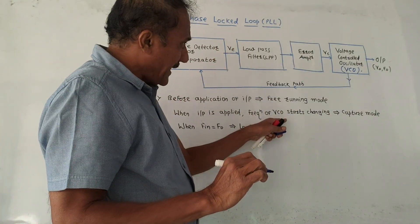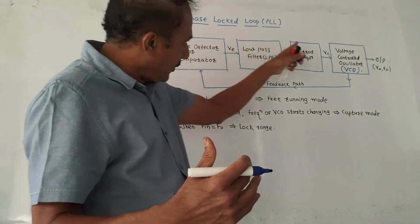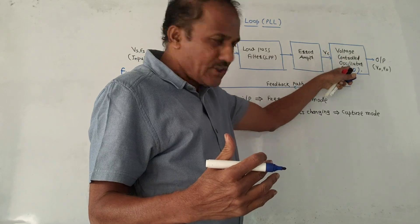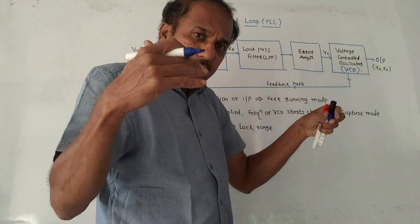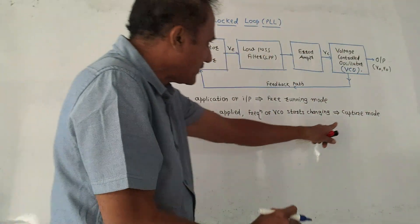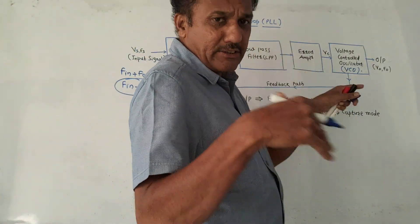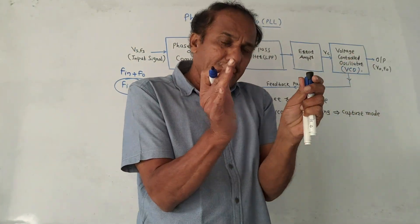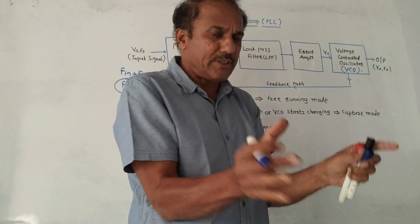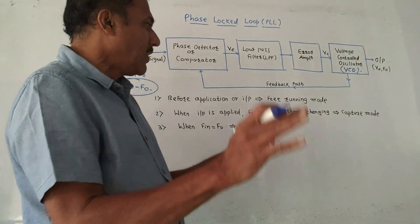In this condition, after the input is applied and the comparison is done, some voltage is generated and the VCO starts oscillating — it will start to capture the input frequency. This particular mode is called capture mode. This process continues until the output frequency becomes equal to the input frequency. When this happens, this particular condition is called lock.